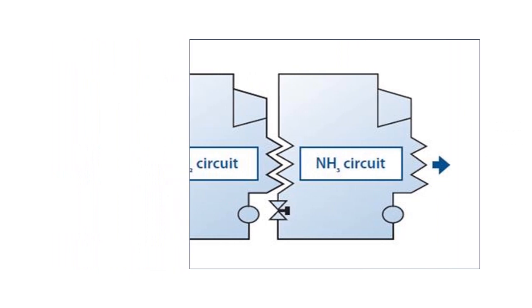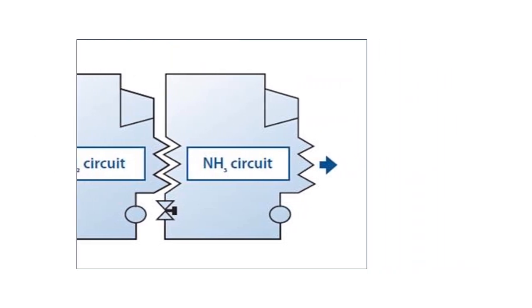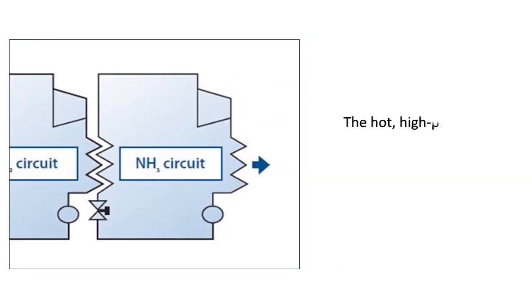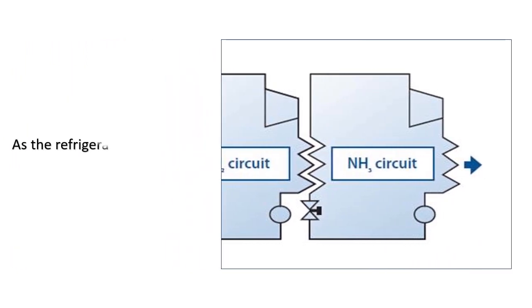This refrigerant vapor is then compressed in a compressor, increasing its pressure and temperature. The hot, high-pressure refrigerant gas flows through the condenser, where it releases heat to the ambient air or cooling water. As the refrigerant cools down, it condenses back into a liquid state.